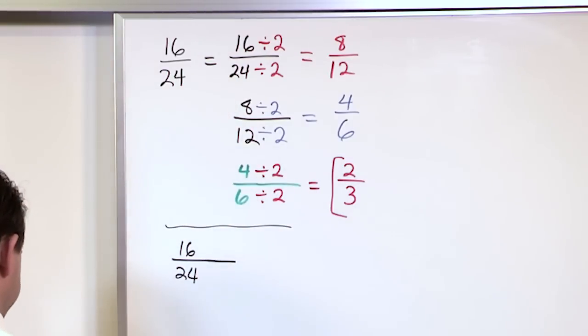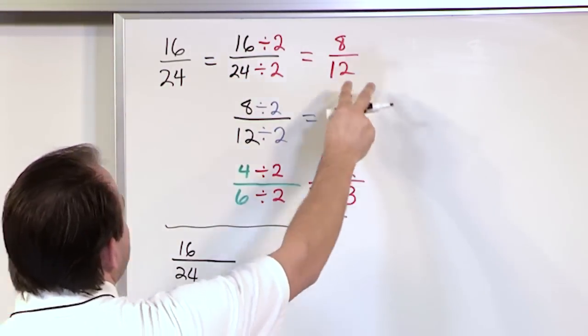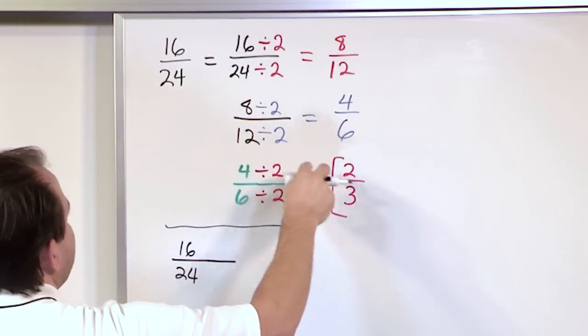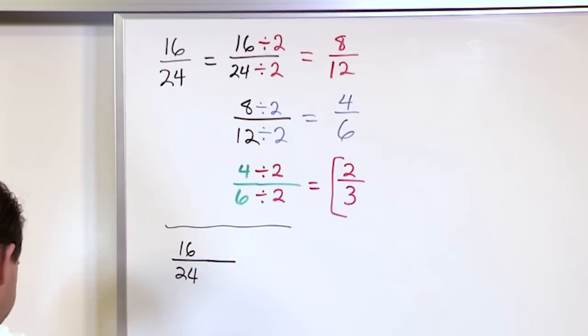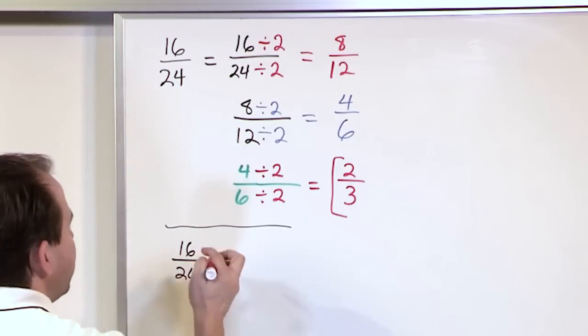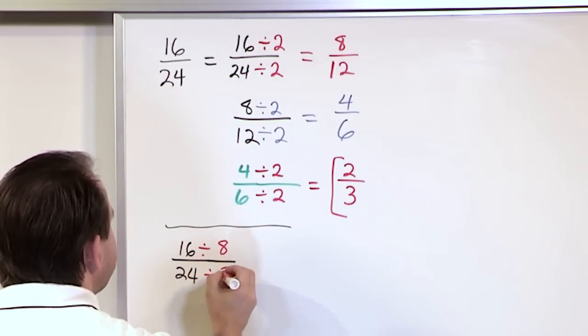If you start over with 16 24ths. Whenever I did the problem I realized that you can divide by 2 because that's the first thing that popped in my head and you get this. And then I say I can divide by 2 again and get this. And I can divide by 2 again and get this. That's all fine. You know it works just great.